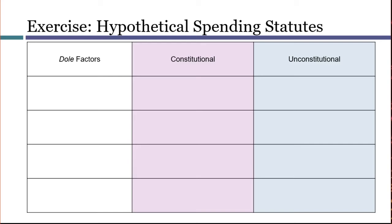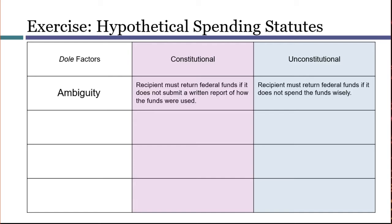A good way to get familiar with these factors is to challenge yourself to come up with examples of statutes that would either satisfy or violate each of them. The requirement for conditions to be unambiguous is designed to avoid unfair surprise to the recipient — a recipient should not suddenly find itself suffering adverse consequences they did not know in advance were possibilities. Please pause the video and invent some spending statutes that you think are and are not unfairly ambiguous. My own example of an unconstitutionally ambiguous spending condition is one that would require the recipient to use the money wisely — a term subject to debate that could be enforced in a way that imposes unfair surprises.